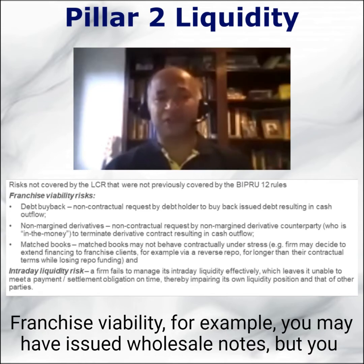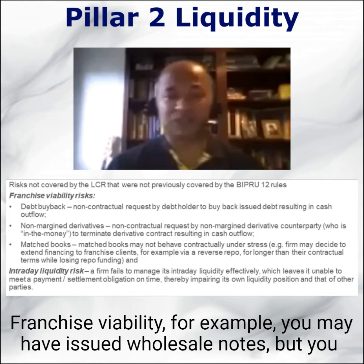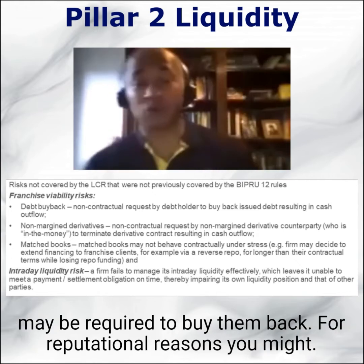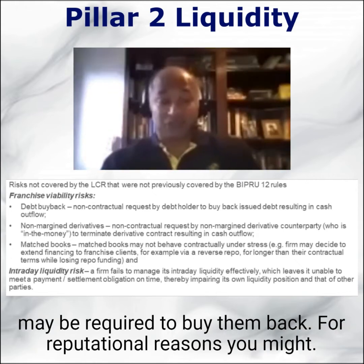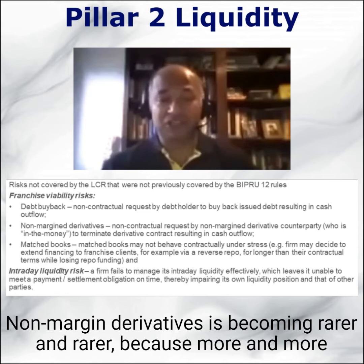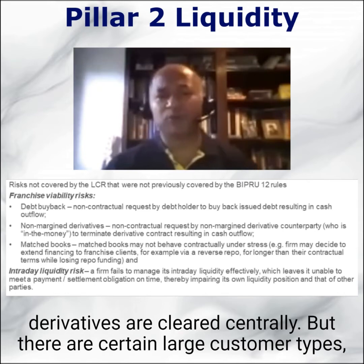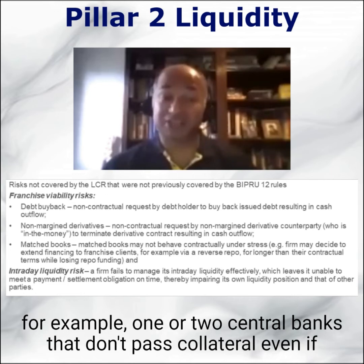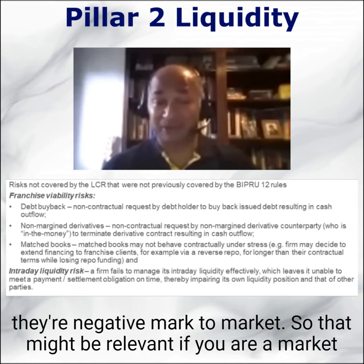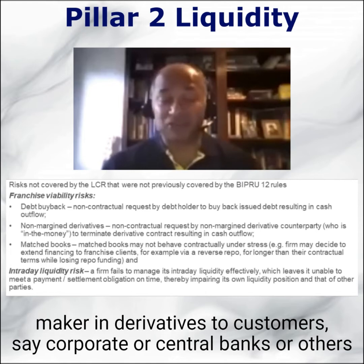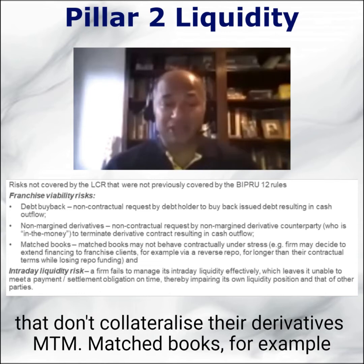Franchise viability: for example, you may have issued wholesale notes but be required to buy them back for reputational reasons. Non-margin derivatives is becoming rarer and rarer because more derivatives are cleared centrally. But there are certain large customer types — for example, one or two central banks — that don't pass collateral even if they're negative mark-to-market. So that may be relevant if you are a market maker in derivatives to corporate, central bank, or other customers that don't collateralize their derivatives.